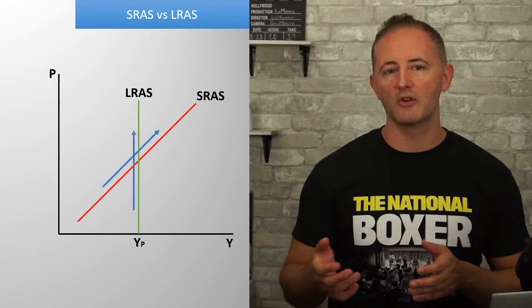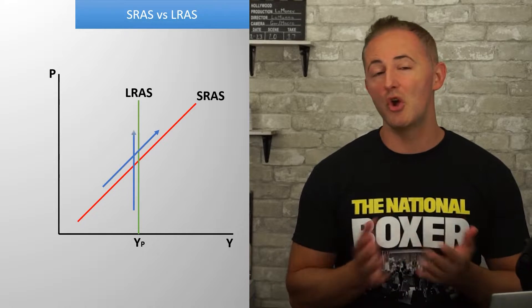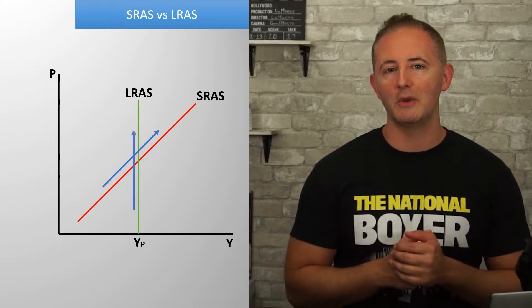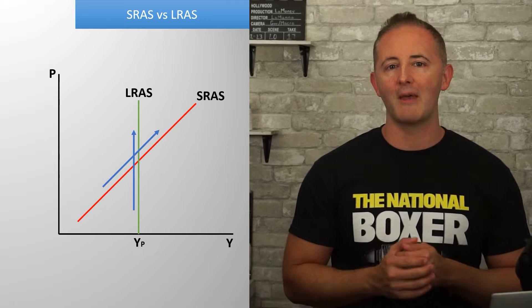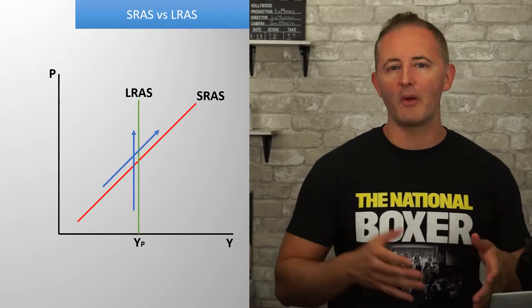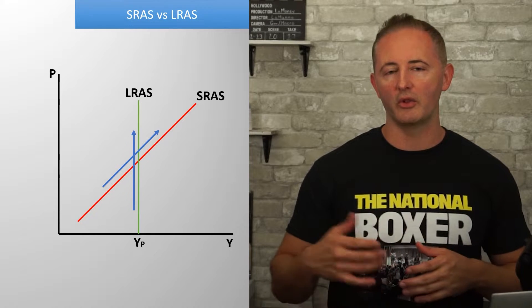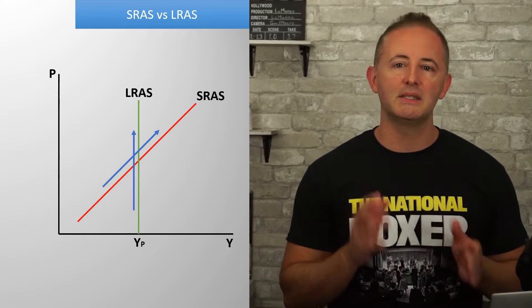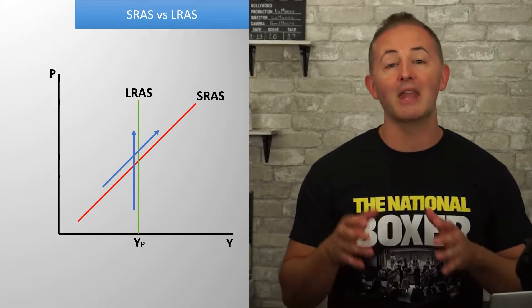The LRAS curve is vertical, which shows that there's no relationship between the price level and the quantity supplied. But how do we get from the short run to the long run? The key is sticky wages and flexible wages. We're going to do this two ways: with an inflationary gap and with a recessionary gap.